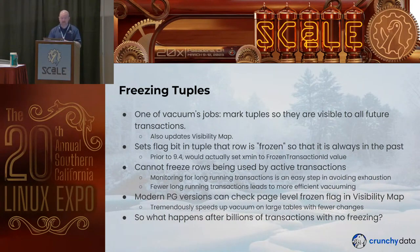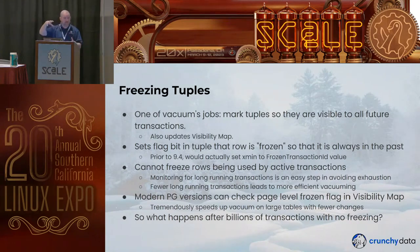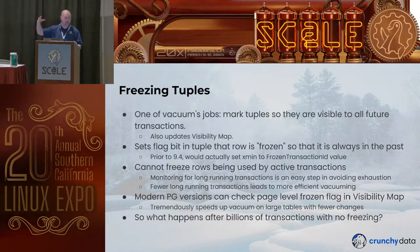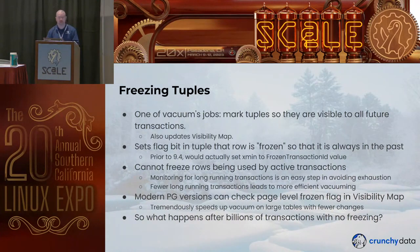Modern versions of PostgreSQL can set a frozen bit not just on each tuple, but every page in PostgreSQL can also have a bit. That lets PostgreSQL skip over the entire page without having to examine it — meaning that entire page is visible to any possible transaction. This lets vacuum run even more efficiently than before.